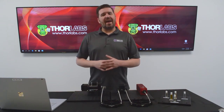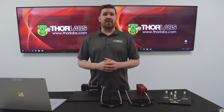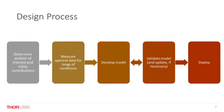Stepping back for a moment — how do we get from a concept to a system like this? It may be helpful to draw some parallels between how one would solve the problem with a traditional spectrometer. At the simplest level, the process may look like this: first, determine the desired chemicals or analytes of interest to measure, and any contributing components to our measurement, whether that be other analytes, measurement conditions, etc. Second, collect our spectral data. Third, develop a model to distinguish the analytes of interest. Fourth, test and update the model with validation sample sets. And lastly, build the system and deploy.